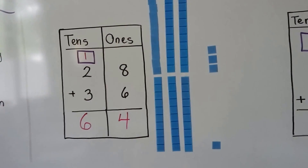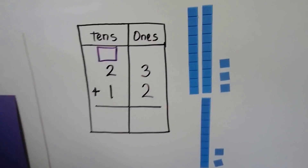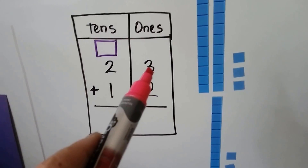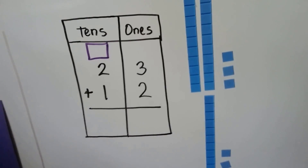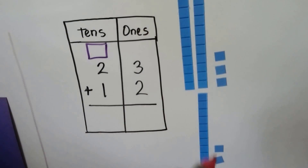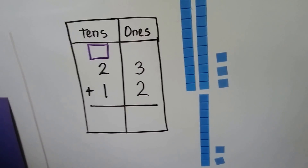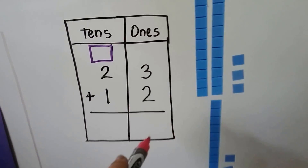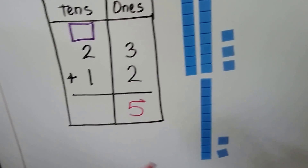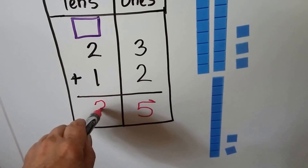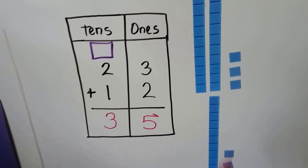Let's try it again. Let's see if we need to regroup. We want to add 23 and 12. We have three ones here and two ones here. Do you see enough ones to make a new ten? We have three, four, five ones — no, we don't have enough to make a new ten. Three plus two is five ones, and we have one, two, three tens. Two plus one is three. Twenty-three plus twelve is thirty-five. We didn't have to make a new ten — we didn't have enough ones.